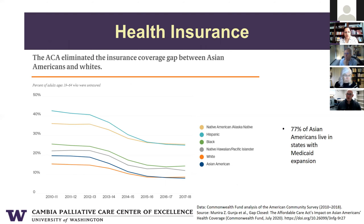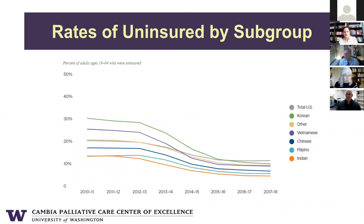More than 77% of Asian Americans live in states with Medicaid expansion, so we really see positive results on this population from the ACA. Looking at uninsurance rates across different Asian subgroups with the ACA, we see a decrease for all groups, with all subgroups coming in under the rate for the overall U.S. population.